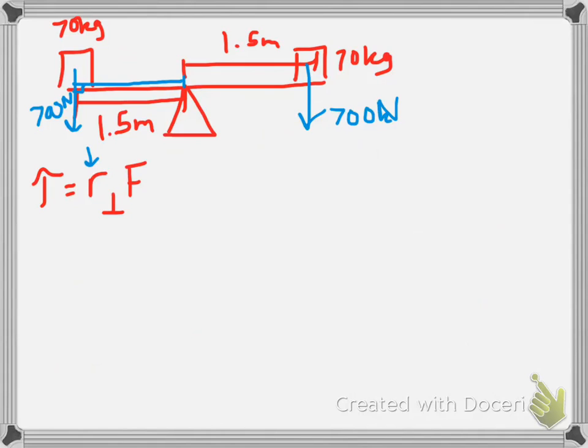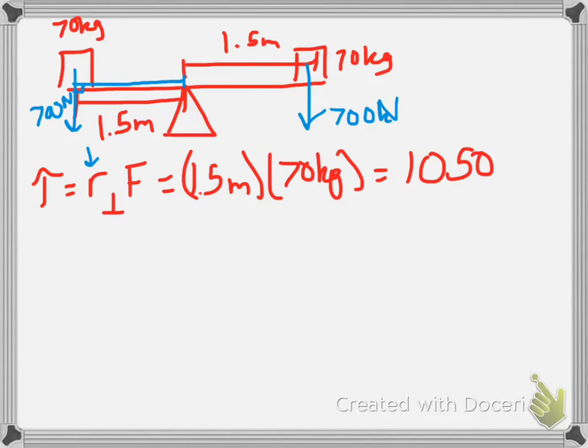So that means our r value is 1.5. So here it is 1.5 meters multiplied by 70 kilograms, which if you put that in the calculator, and hopefully I did my mental math right, it is 1,050.